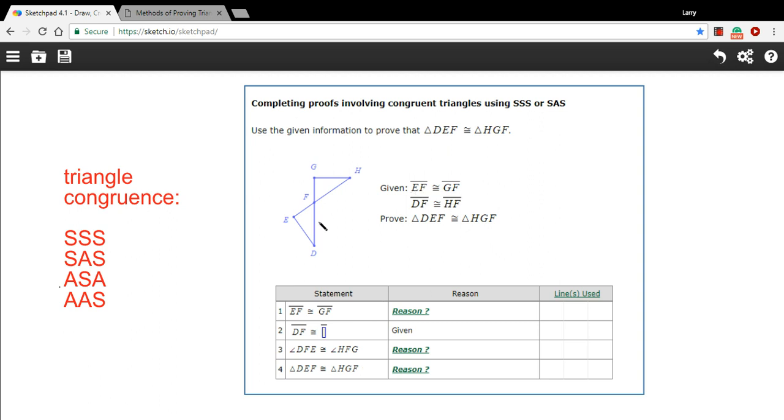So let's just mark what we know here. It says given EF is congruent to GF. So EF is here and GF is here. So those two sides are the same. And then it says DF is congruent to HF. So here's DF and here's HF. So that's the given information. It looks like we have two sides that are congruent, which is not enough.